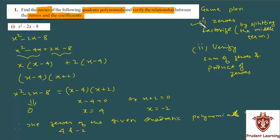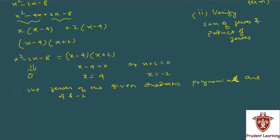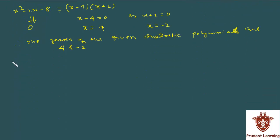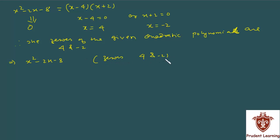Ek kaam toh kar liya humne — zeros toh nikaal liye. Ab humko verify karna hai relationship between zeros and coefficients. Toh woh kaise karenge — dekhen, main dobara se polynomial likhta hun. Humko given tha x² − 2x − 8. Zeros humne nikale: α = 4 and β = −2.